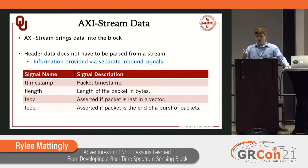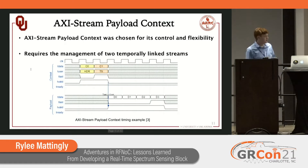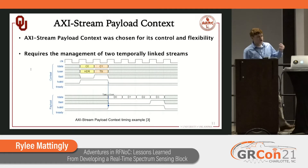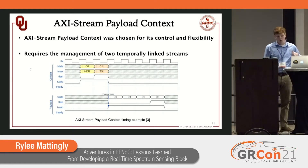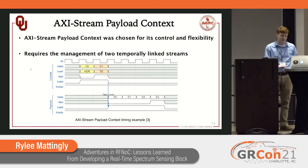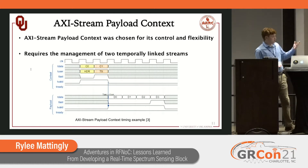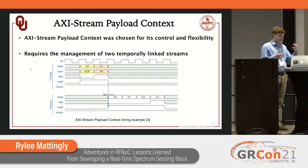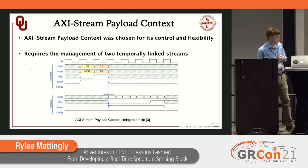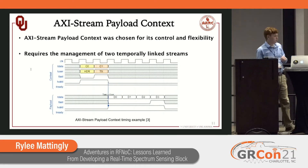If you really want control over that header information, there is another interface: the AXI Stream payload context interface. This gives us two AXI Streams coming in — one has all of our context information (the header, timestamp, and metadata), and then a payload stream with your data. These are linked in time and support features like prefetching of the header and timestamp. There is a little more to manage, but this really gives you great control over all of the data fields.